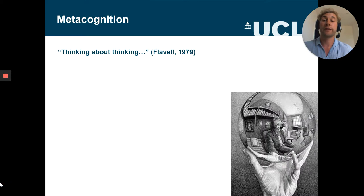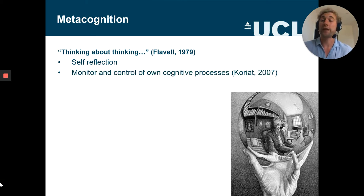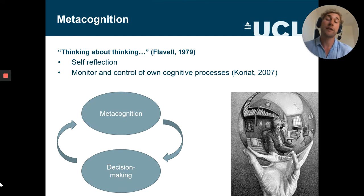Let's start with what is actually metacognition. It's often defined as thinking about thinking or cognition about cognition, so there is a clear notion of self-reflection here. But it's also quite a broad definition. More specifically, we often define metacognition as a process that monitors and controls other cognitive processes.